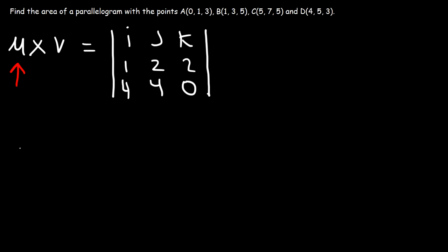So now let's calculate the cross product of those two vectors. So first, we're going to have the symbol, or the unit vector i. And i is located in the first row, first column. And this gives us a 2 by 2 matrix with the numbers 2, 2, 4, 0. And so let's write that.